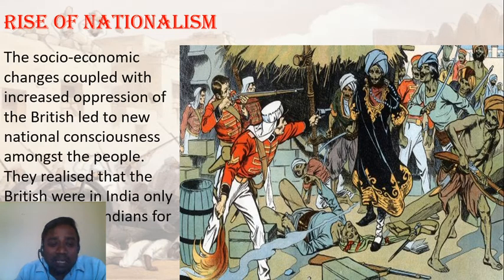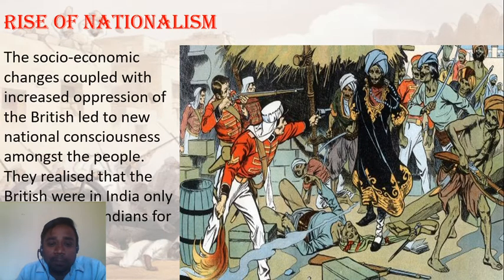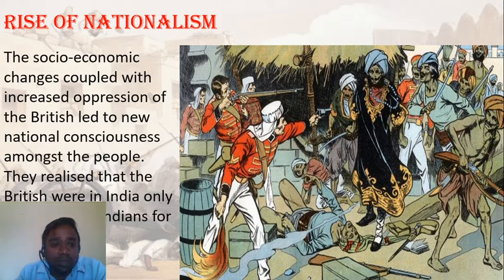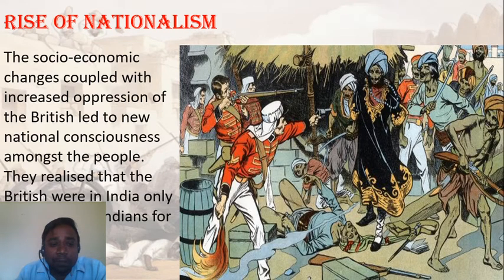Indians realized that Britishers were in India only to exploit them for their own benefit. Britishers established themselves as the British East India Company and then entered into politics. Basically it was a merchant trading company, and all the work they did in India was just to get more and more benefit out of it. By the start of the 19th century, Indians realized that Britishers were in India only to exploit them and were not going to benefit Indians at all.